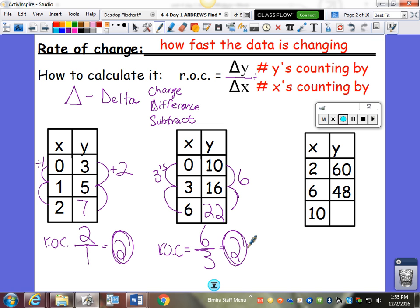They're not all 2, by the way, so don't get attached to that number. Over here, the change in Y - now this one's different. 60 to 48, that's going down by 12. These are still going up by 4's. So my rate of change is negative 12 over 4, which is negative 3.